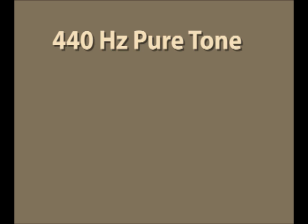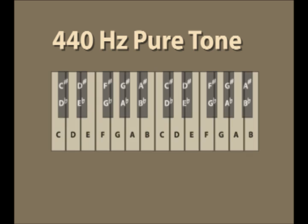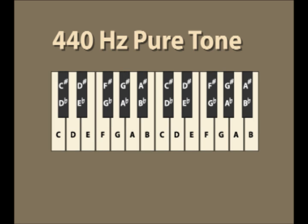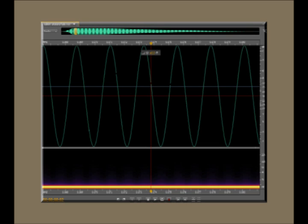Let's start with a simple tone of a frequency of 440 Hz or 440 cycles per second. This is known as a pure tone. On the piano keyboard, 440 Hz corresponds to a note of A above middle C. Here is what a 440 Hz sine wave sounds like. And here is what a 440 Hz pure tone looks like on a device that plots amplitude versus time.